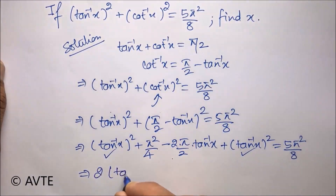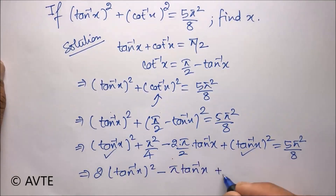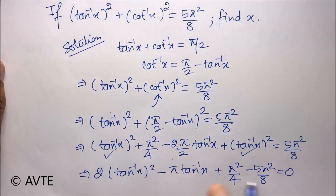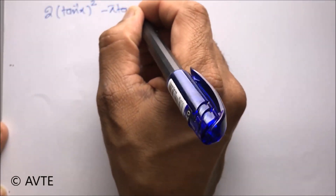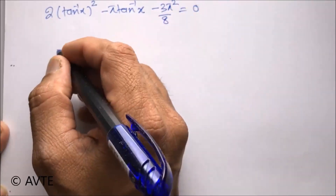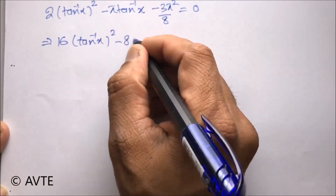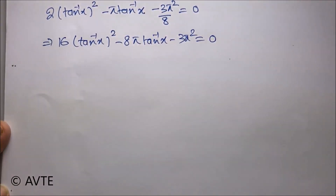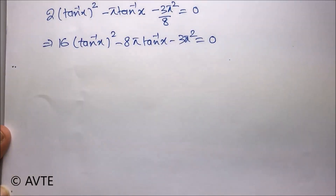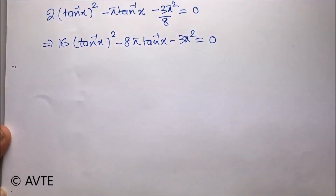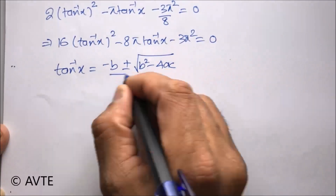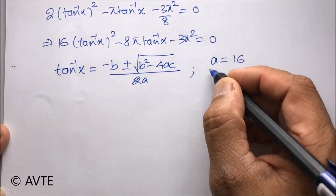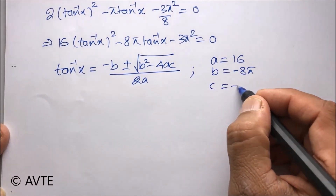Now we will open this to turn it into a quadratic. On further simplification, we get a standard quadratic equation. We'll try to solve this by splitting the middle term, but since pi is involved, we will use the discriminant method. Clearly, a is 16, b is minus 8 pi, and c is minus 3 pi squared.